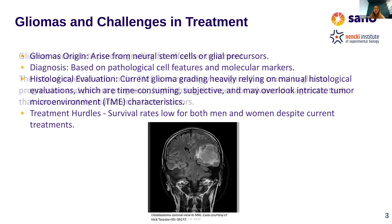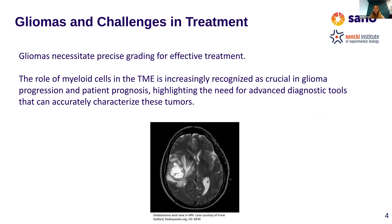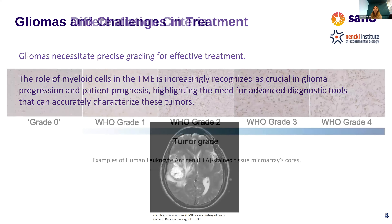More information about gliomas: myeloid cells are an important component and are increasingly recognized as crucial in glioma progression and patient prognosis. There is a need for precisely grading the tumor to apply effective treatment. We are looking to obtain advanced diagnostic tools that could accurately characterize these tumors, their grades, types, and subtypes.